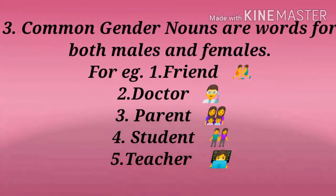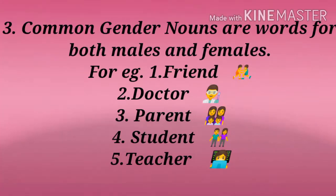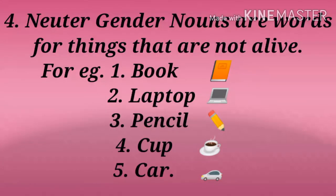Number three: common gender. Common gender nouns are words used for both males and females — like friend, which can be a girlfriend or boyfriend; doctor, who can be male or female; parent, who can be mother or father; student, who can be a girl or boy; and teacher, who can be a sir or ma'am.